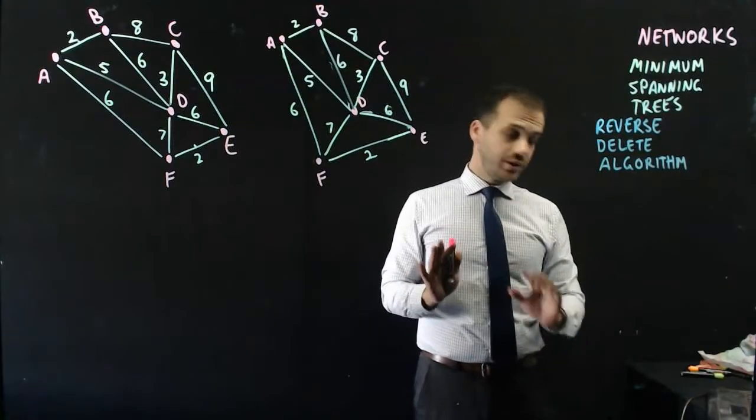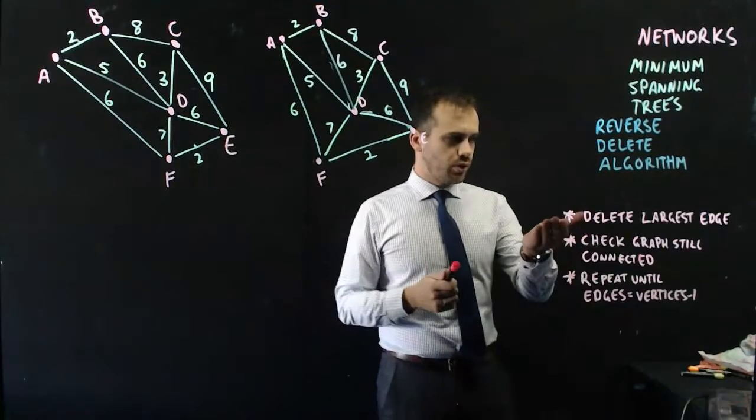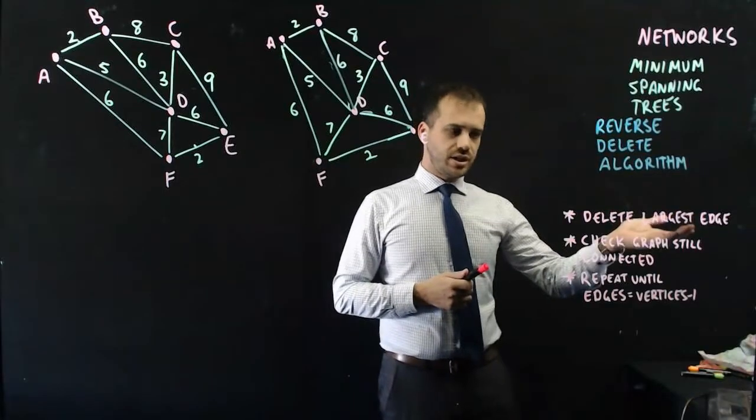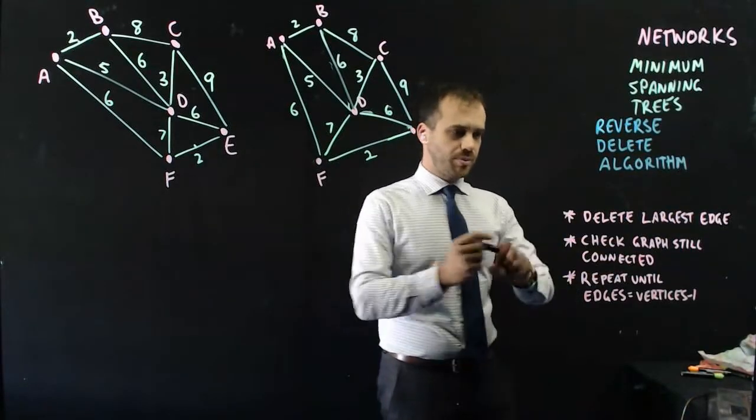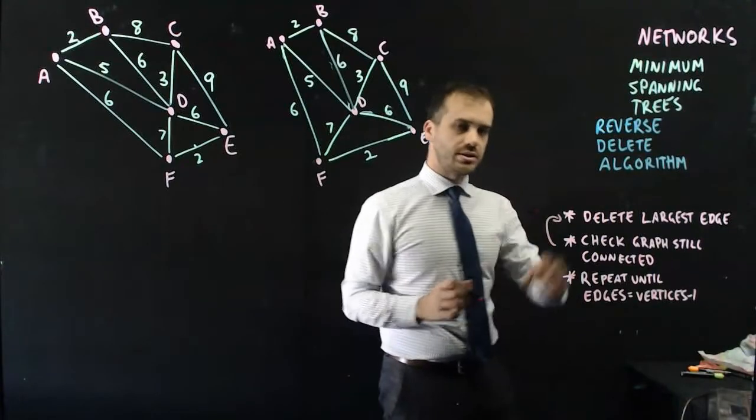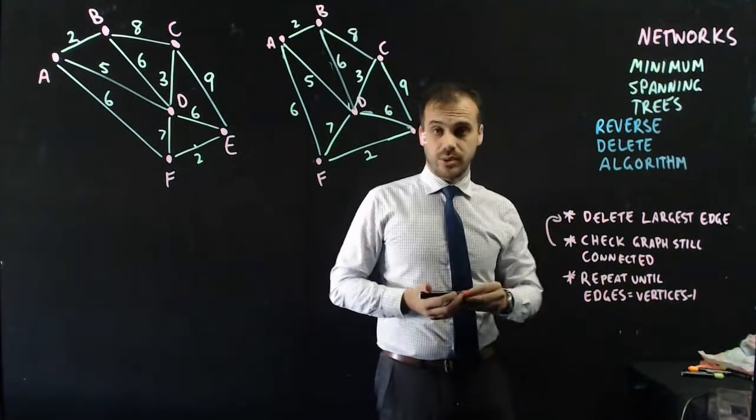The steps are really easy to follow. All we need to do is delete the largest edge, check that the graph is still connected. If it is, keep repeating that loop until the edges equal vertices minus one.